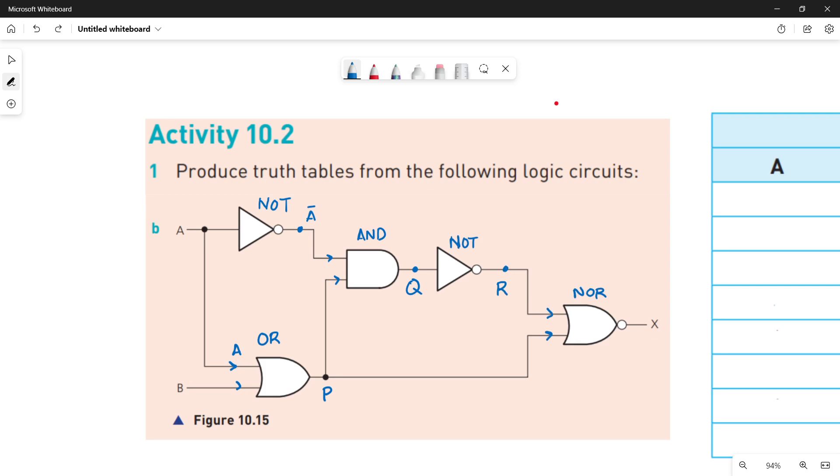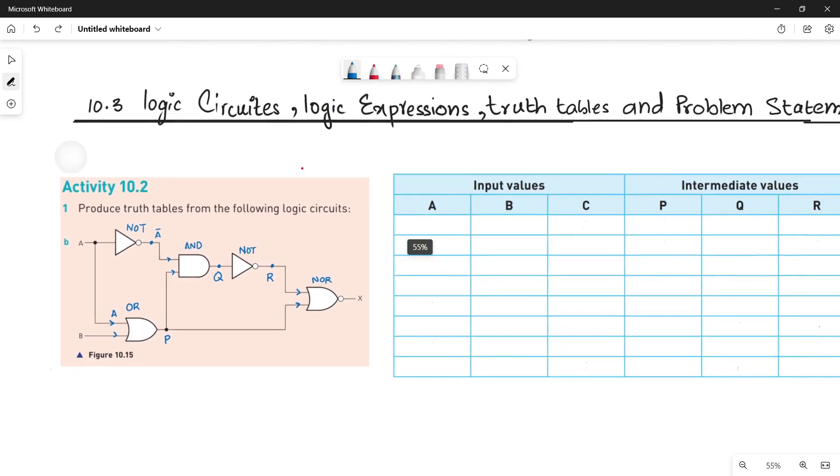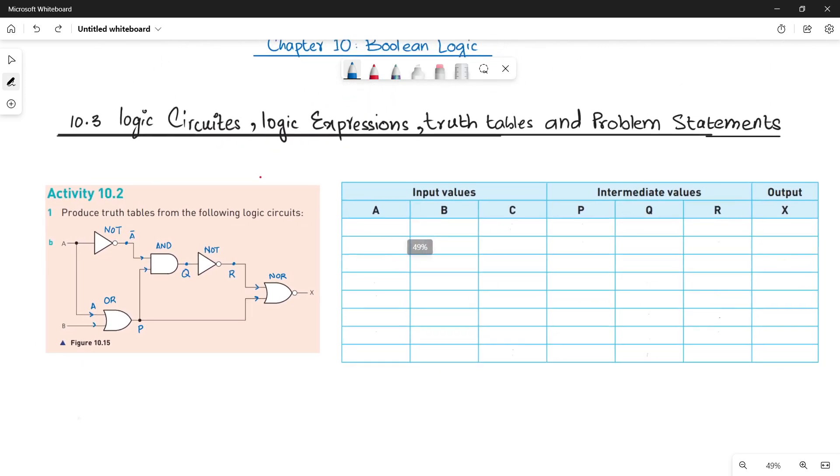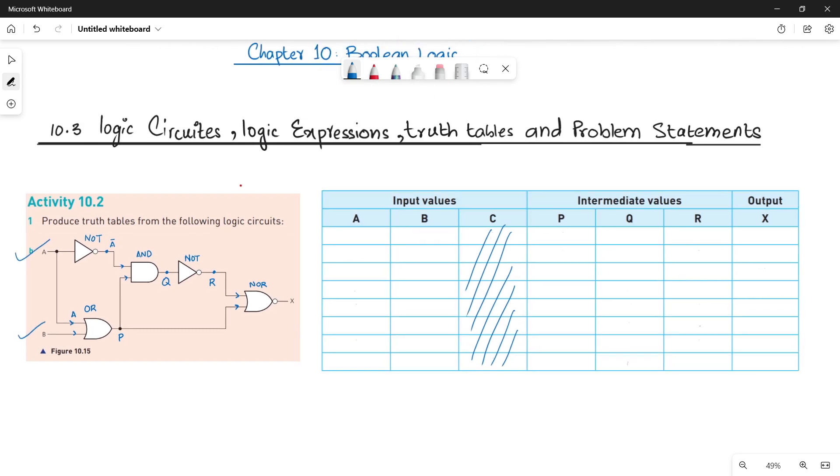If you have understood this, now quickly moving towards the truth table and marking the columns. So the first three columns are your input values. We don't need the column C because we only have two inputs here. Look at this. You have only A and B. So no need for C. Now what you have to do, first one is your NOT gate that gives you A bar. So let's just write A bar with A over here. We will be converting the values of A and writing down A bar just next to A.